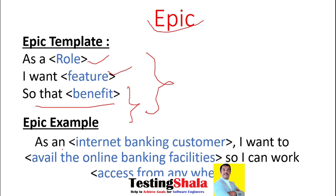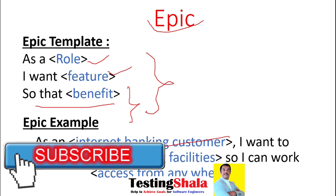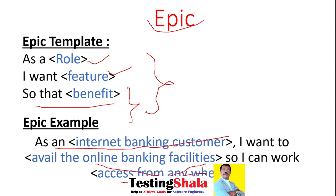As an online banking customer, I want to avail an online banking facility so that I can access my bank account anywhere in the world. That is the epic example. The epic will be further divided into user stories.